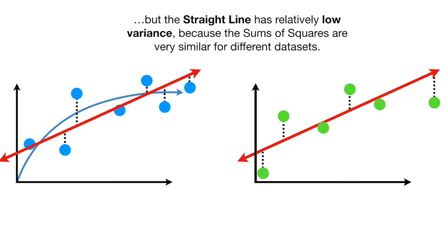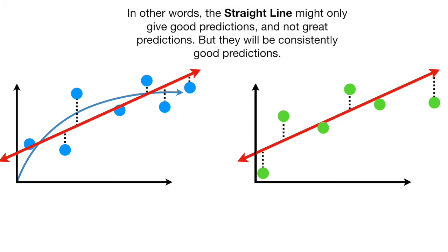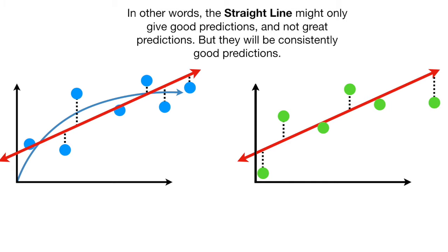But the straight line has relatively low variance because the sums of squares are very similar for different data sets. In other words, the straight line might only give good predictions and not great predictions, but they will be consistently good predictions. Bam!